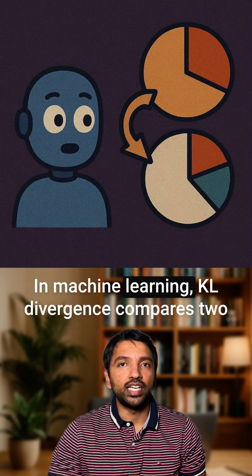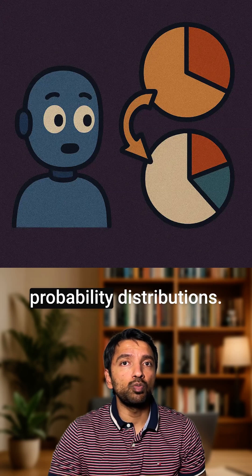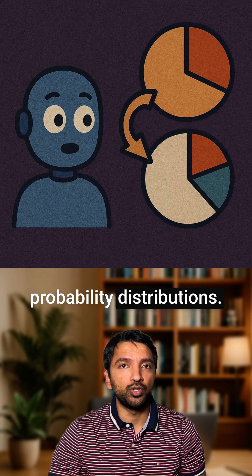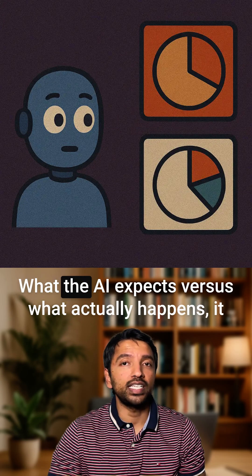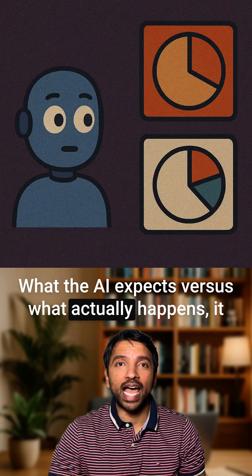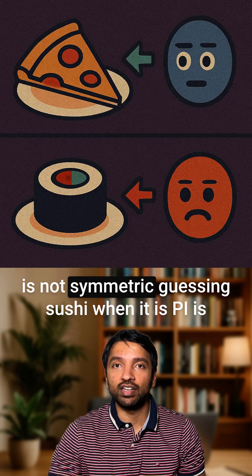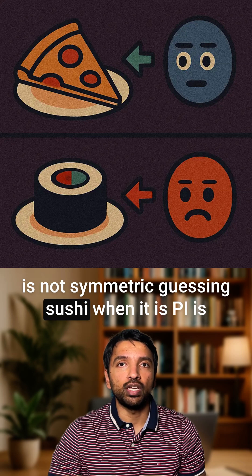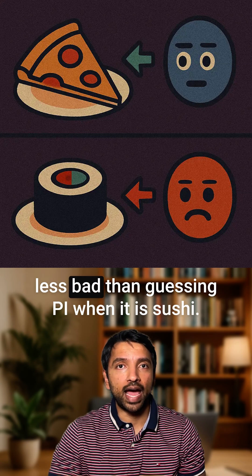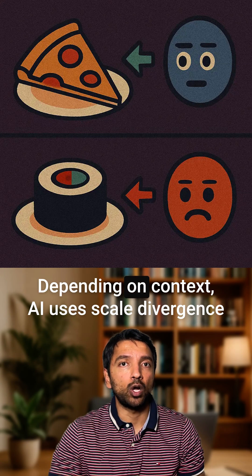In machine learning, KL divergence compares two probability distributions — what the AI expects versus what actually happens. It is not symmetric. Guessing sushi when it is pizza is less bad than guessing pizza when it is sushi, depending on context.